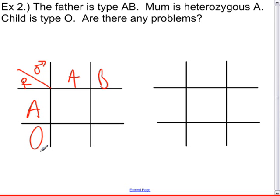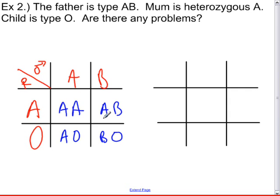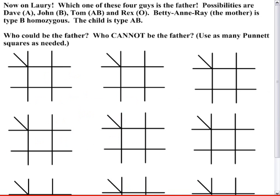The father is type AB and the mom is heterozygous A, meaning she has both the A and the O allele. Looking at the four possible children, we didn't need a second Punnett square because both parents were fixed. None of the four possibilities are type O. This is inconsistent with the given data — either the blood types of the parents are incorrect, or one or more of them is not the biological parent. So yes, there is definitely a problem.